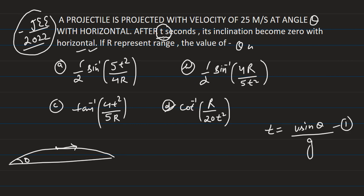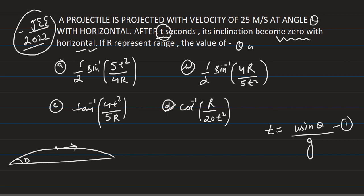So after these t seconds the inclination becomes 0, which means the projectile is at the highest point. Therefore, the value of t is u sin θ / g.